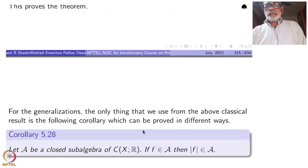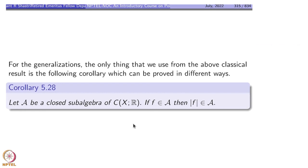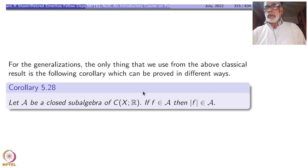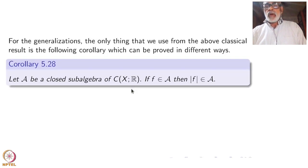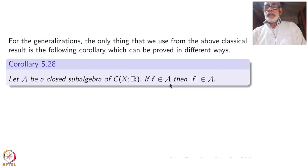Let us take one small step towards more general results. For generalizations, the only thing we use from the classical result is the following corollary, which can be proved in different ways without proving the full Weierstrass theorem. Corollary: Let A be a closed subalgebra of C(X,R). If f belongs to A, then |f| also belongs to A.